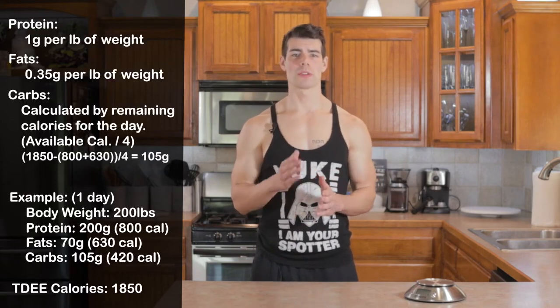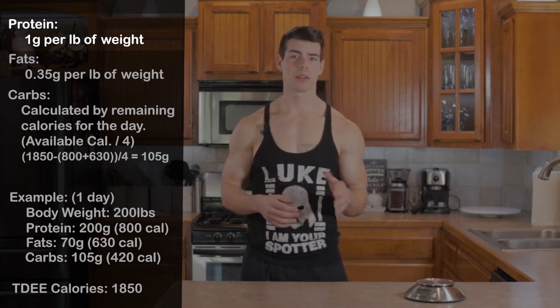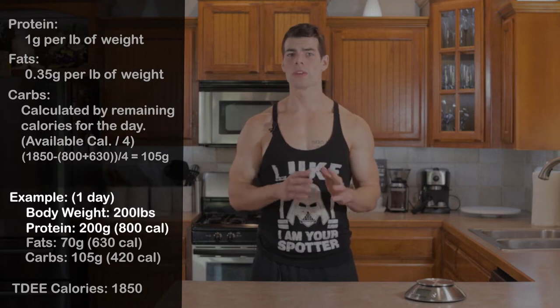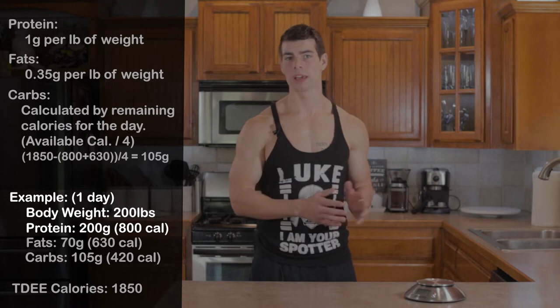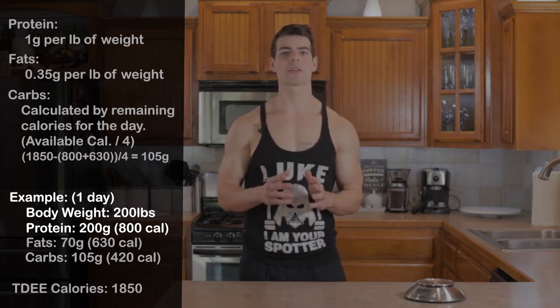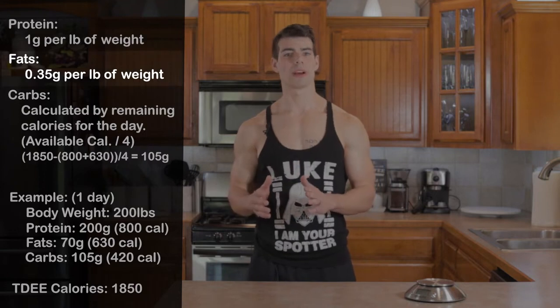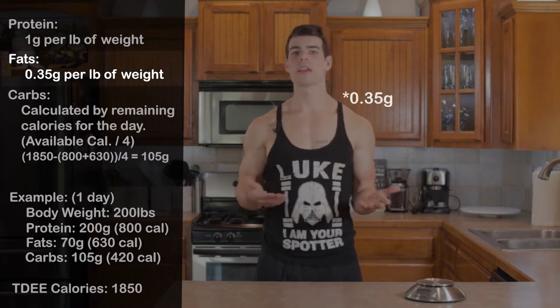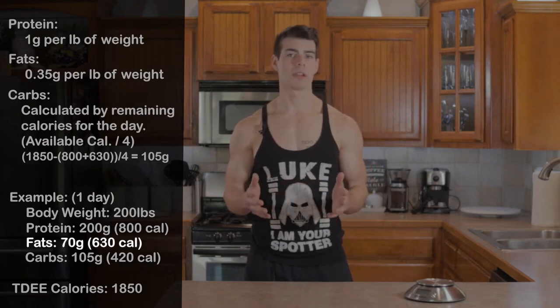Breaking down macros can be a little complicated since there's some math involved. I like to start with protein, using 0.75 grams to one gram per pound of body weight. For example, if you weigh 200 pounds, you're going to be looking at 175 to 200 grams of protein per day. The next step is to calculate your grams of fat — take the body weight and multiply that by 0.305. Looking at our example of 200 pounds, this would come out to 70 grams of fat.